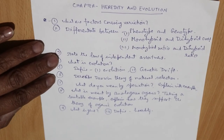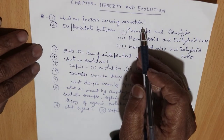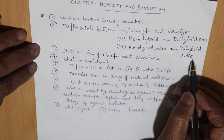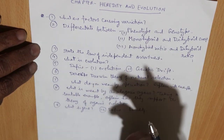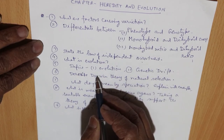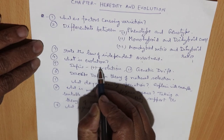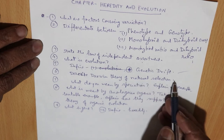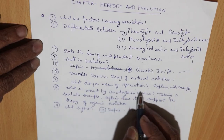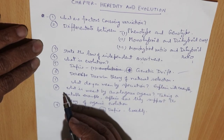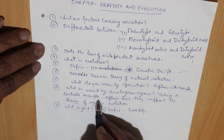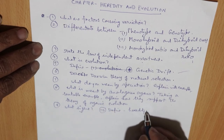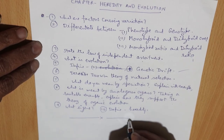The last chapter is heredity and evolution. What are the factors causing variations? Differentiate between phenotype and genotype, and between monohybrid cross and dihybrid cross, along with their ratios. State the law of independent assortment under Mendel's laws of inheritance. Define genetic drift. Describe Darwin's theory of natural selection. What do you mean by speciation — explain with one or two examples. What is an analogous organ and how does it support the theory of organic evolution? What is a gene, and define heredity.